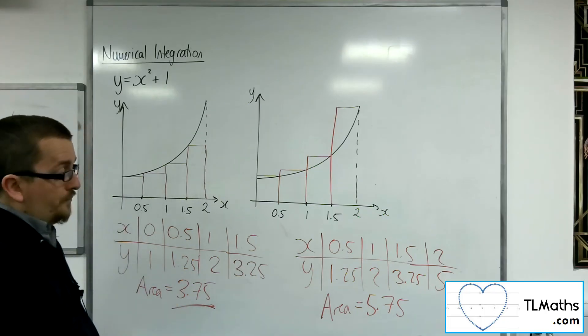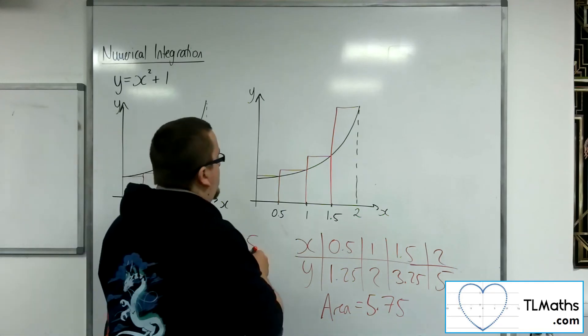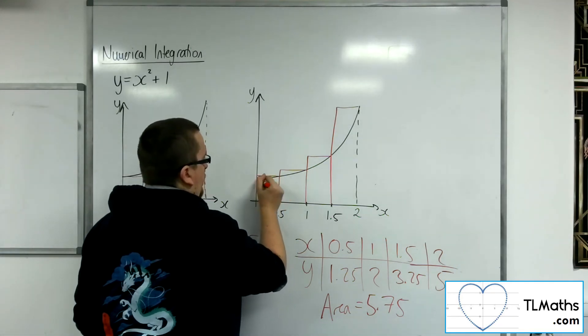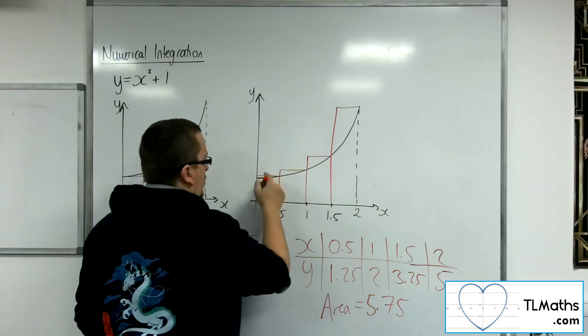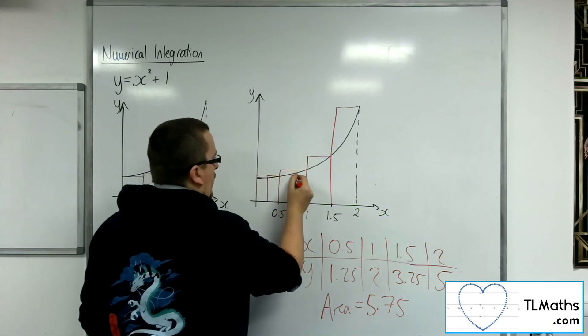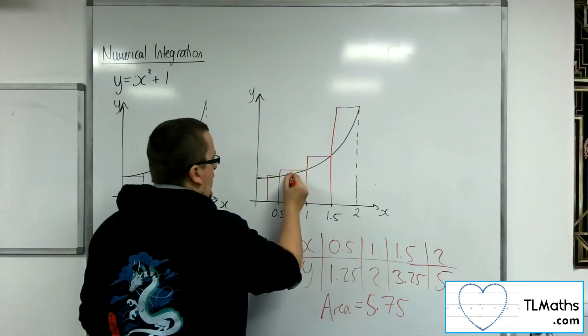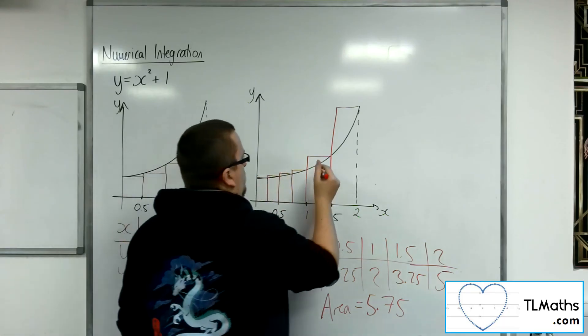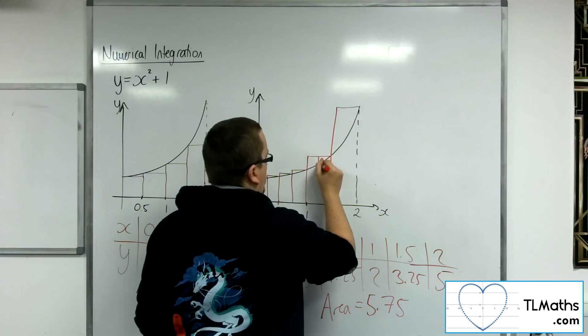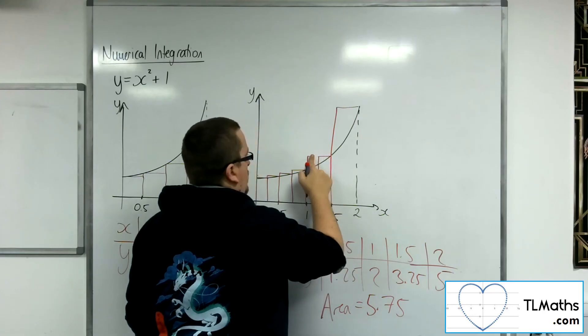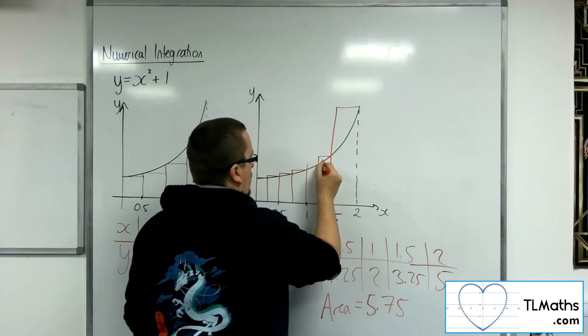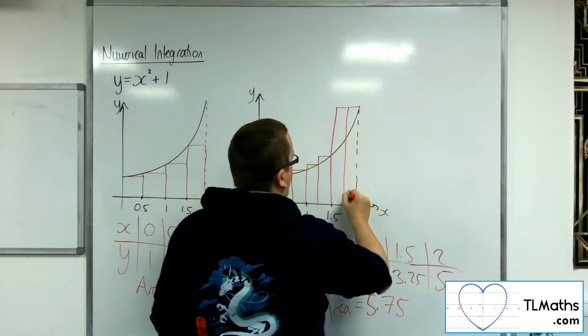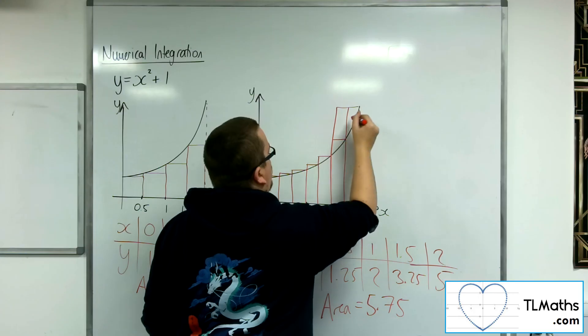So, if I had instead chosen to halve those, what will happen is it will minimise the differences that I've got here. So, this would be the situation.